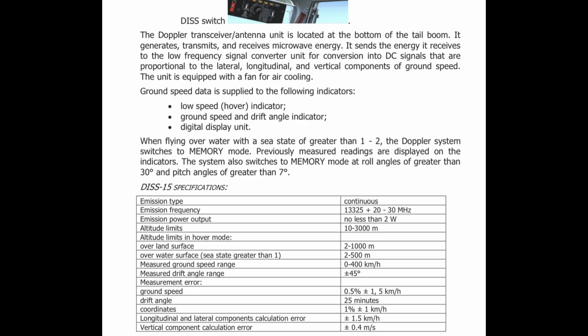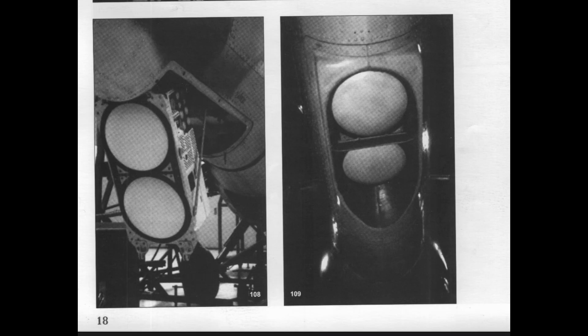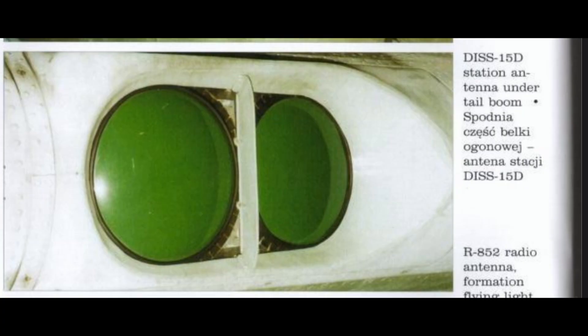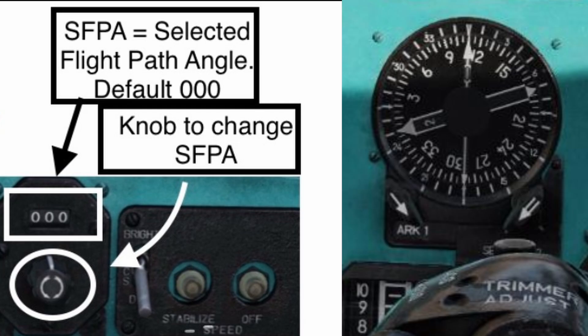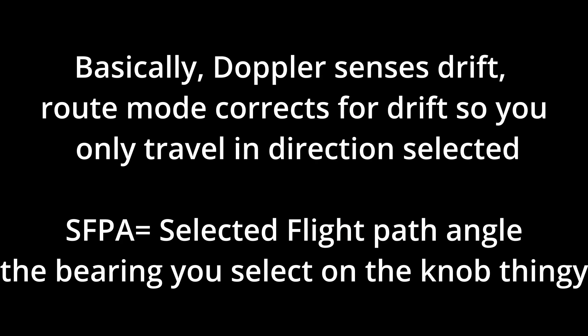Let me explain route mode first as I use it the most. If within Doppler limits, we can use the route mode provided we are above 50 kilometers per hour ground speed. It will follow the SFPA, which stands for Selected Flight Path Angle, which you select with this knob and displayed in this window. The basic operating principle of the route mode isn't like heading hold, where it only points your nose and doesn't care about anything else. Instead, it tries to make your ground track — the path that you fly along the ground, affected by wind — align with the SFPA.